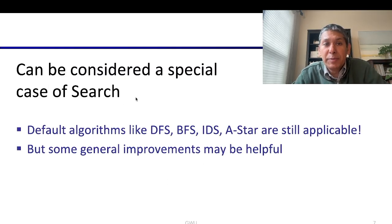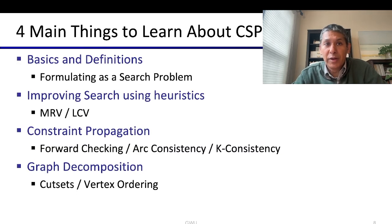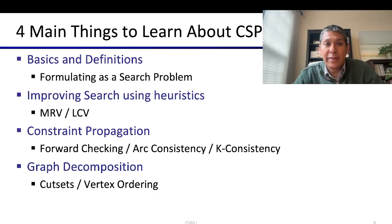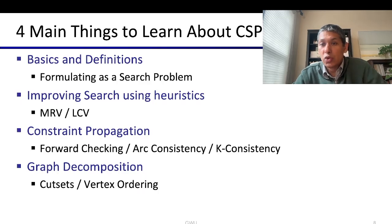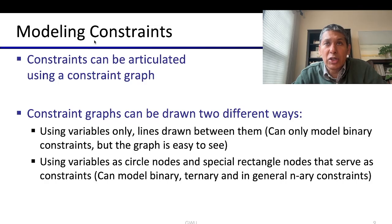To summarize: CSPs can be considered a special case of search, and default algorithms like DFS and BFS are still applicable, but some general improvements can be very helpful. There are four main things to learn about CSPs: first, the basics and definitions; second, improving CSP search using heuristics; third, constraint propagation to reason about domain values; and fourth, using the constraint graph structure to simplify the problem further. The videos are broken down accordingly.